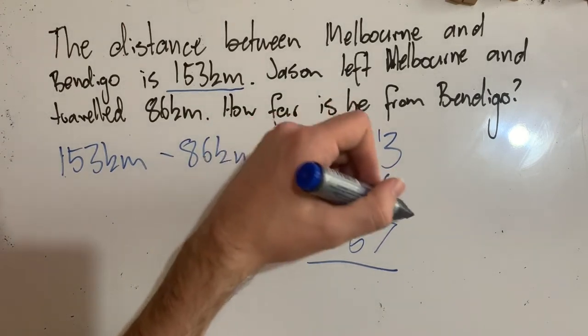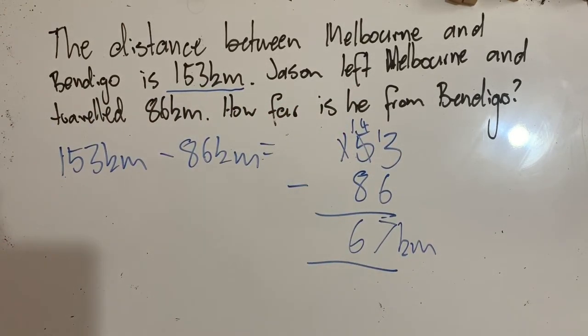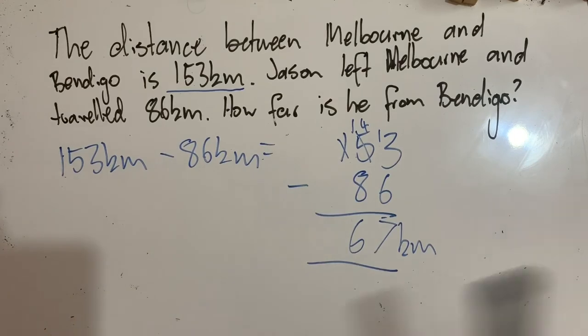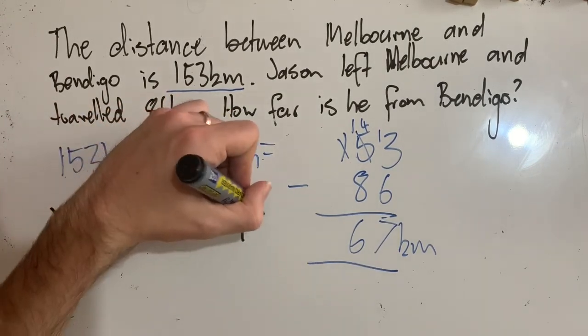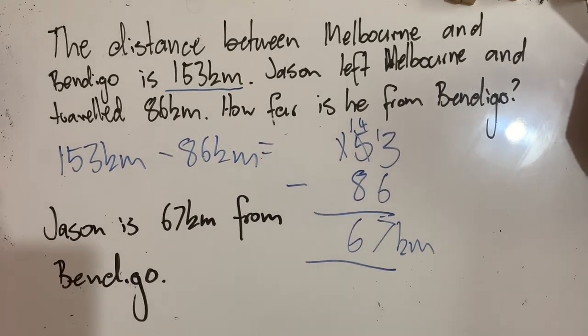Well, not quite because I need to add my units of measurement and I need to write this in a more acceptable form for the question because the question has asked me it in worded form. I should write my answer in worded form as well. Jason is 67 kilometers from Bendigo. Remembering my units of measurement there. And there we have it.